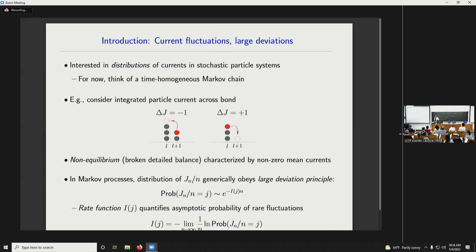So current fluctuations. The idea is that we're interested in distributions of currents in stochastic particle systems, not just expected values of currents, but in their distributions, probability of seeing a current away from the mean. And to set the scene, think for now of a process without memory, of a time-homogeneous Markov chain, so discrete time. You can think about the current between two states in the chain, or for example, between two sites on a lattice, simply by counting minus one when a particle jumps back across the bond between the sites, and plus one when a particle jumps forward. So it's like counting the cars that go past you on the road.